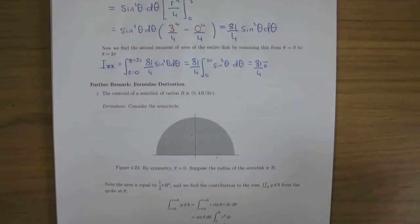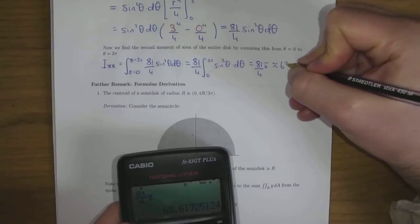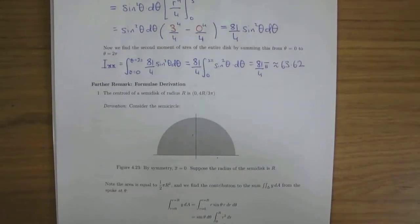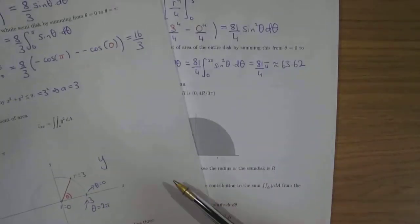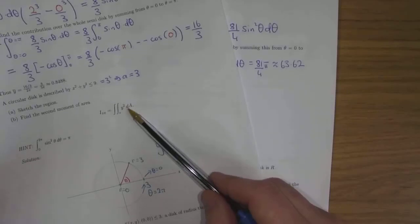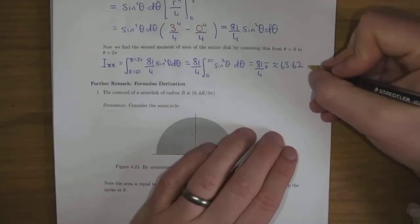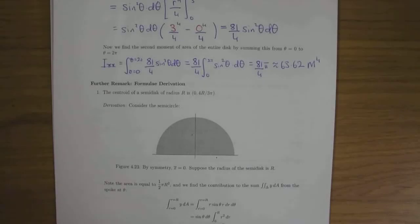Since units are mentioned, a decimal approximation makes sense. The result to four significant figures is 63.62. The units come from meters times meters squared for area — ultimately it's meters to the power of four. And that's a wrap on that.